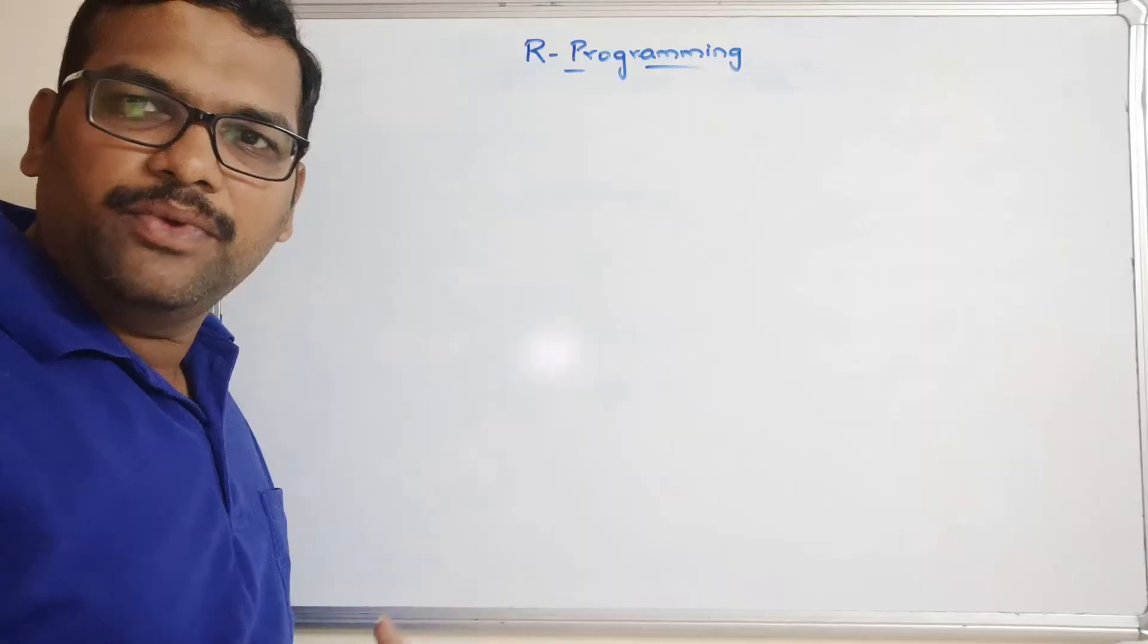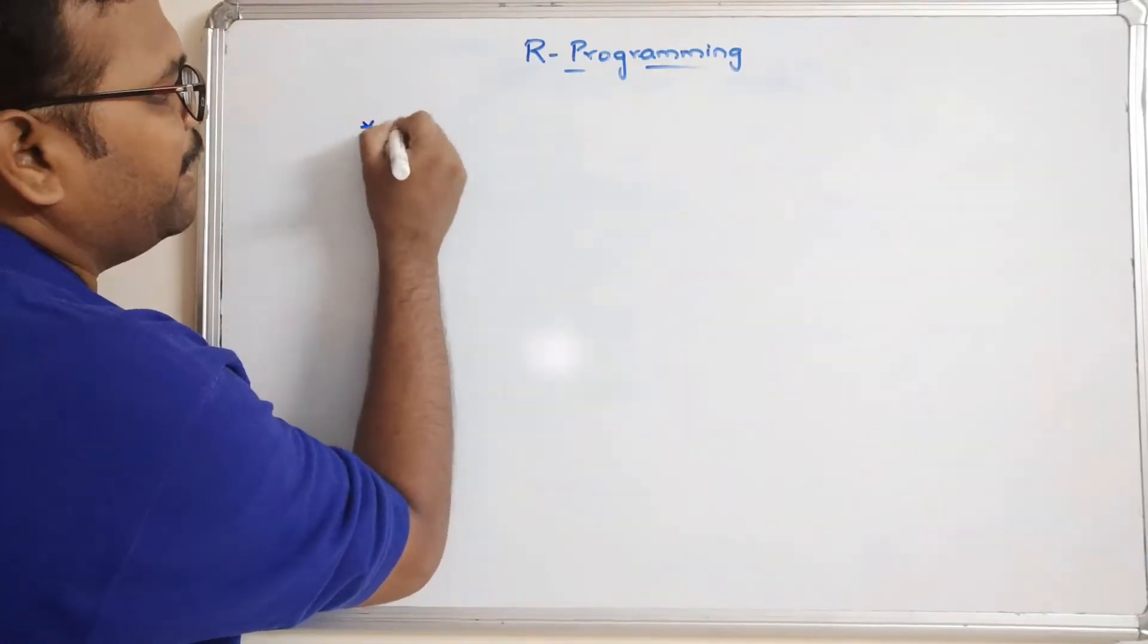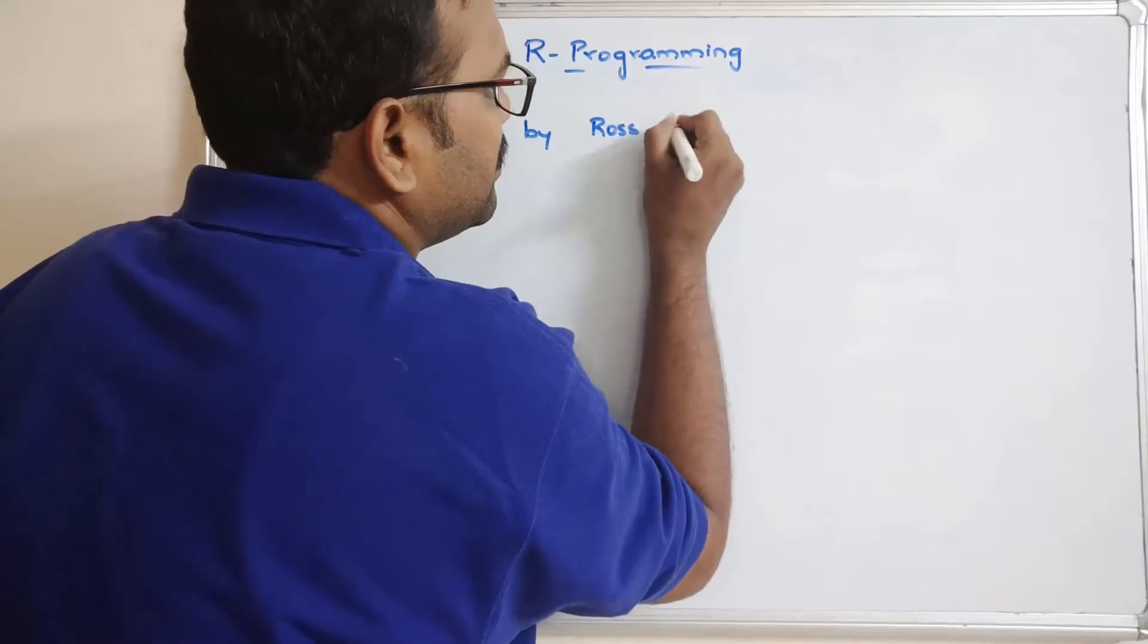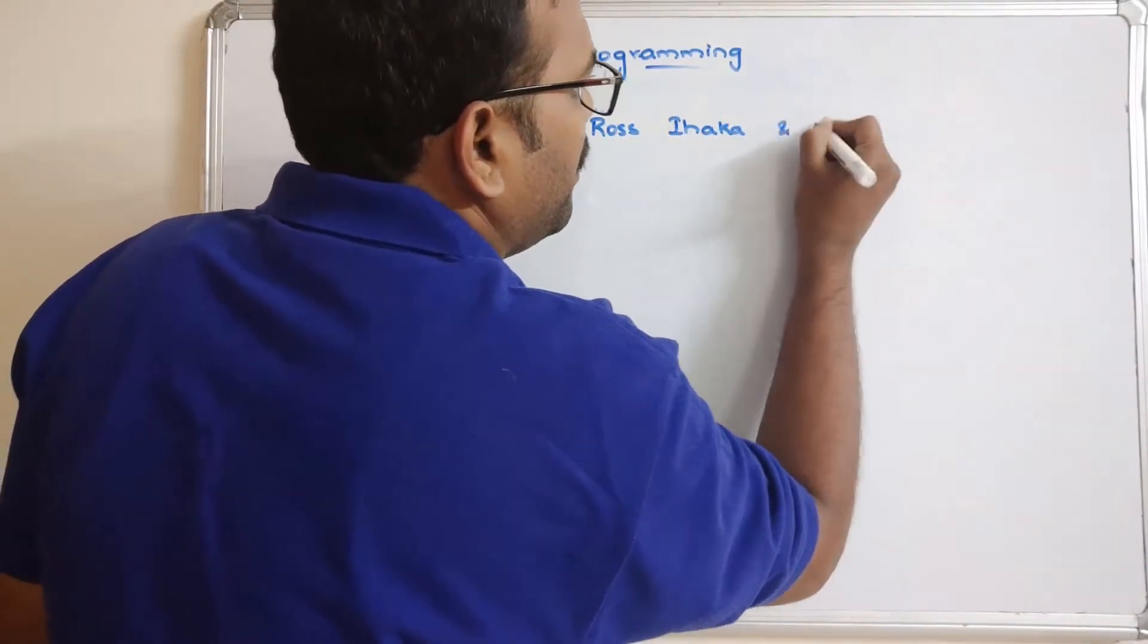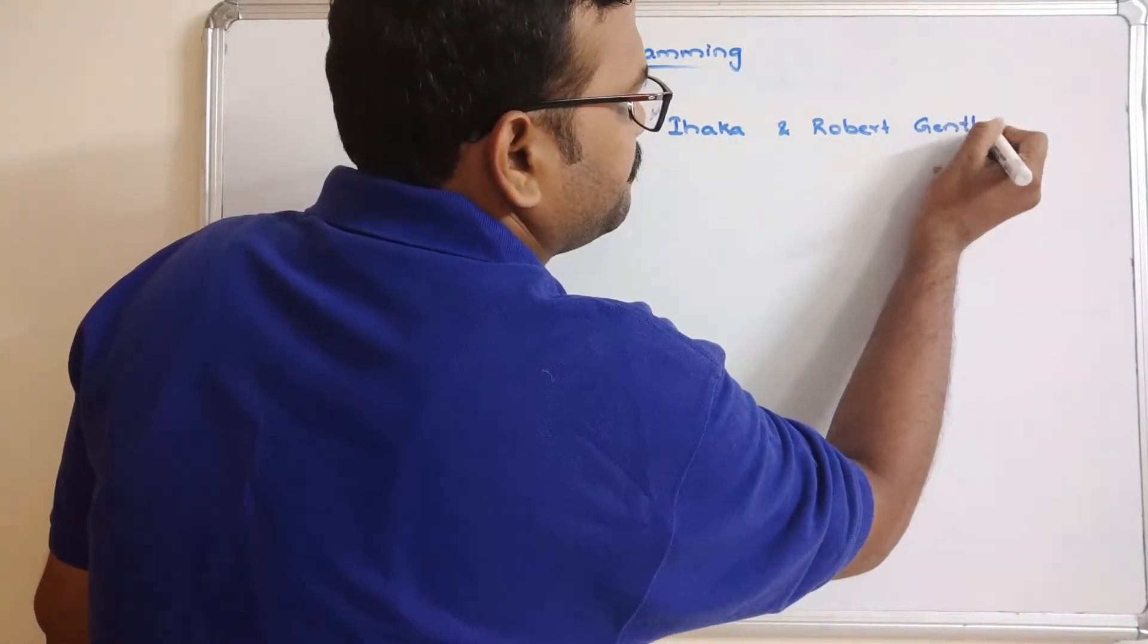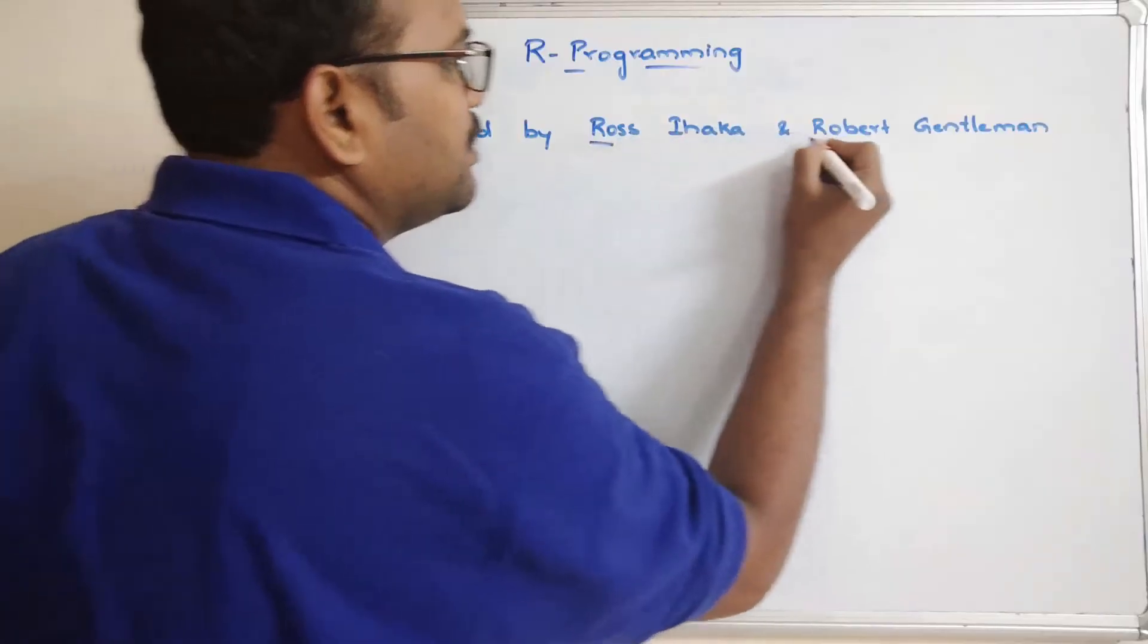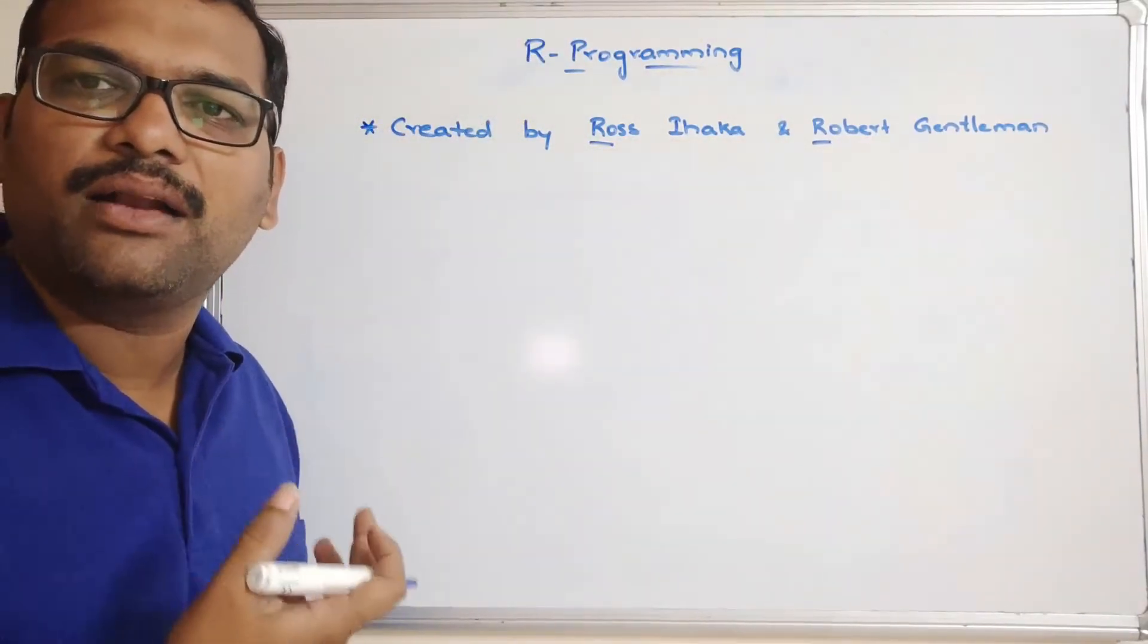This is also a programming language similar to Python. This was created by two authors, Ross Ihaka and Robert Gentleman. The name for this programming language comes with the starting letters of both the authors. That's why we call it R programming.